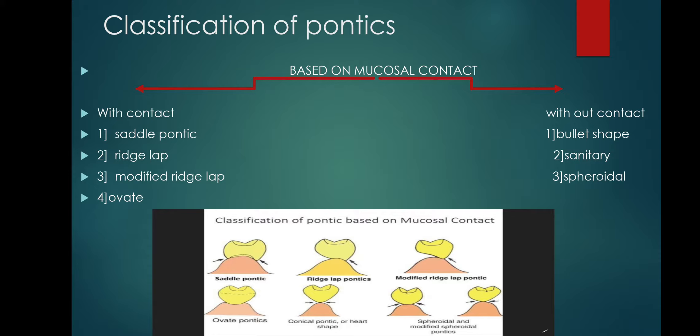In modified ridge lap, tissue contact occurs only on the buccal surface; on the lingual surface there is no tissue contact. There is a buccolingual concavity and mesiodistal convexity present to prevent food accumulation.